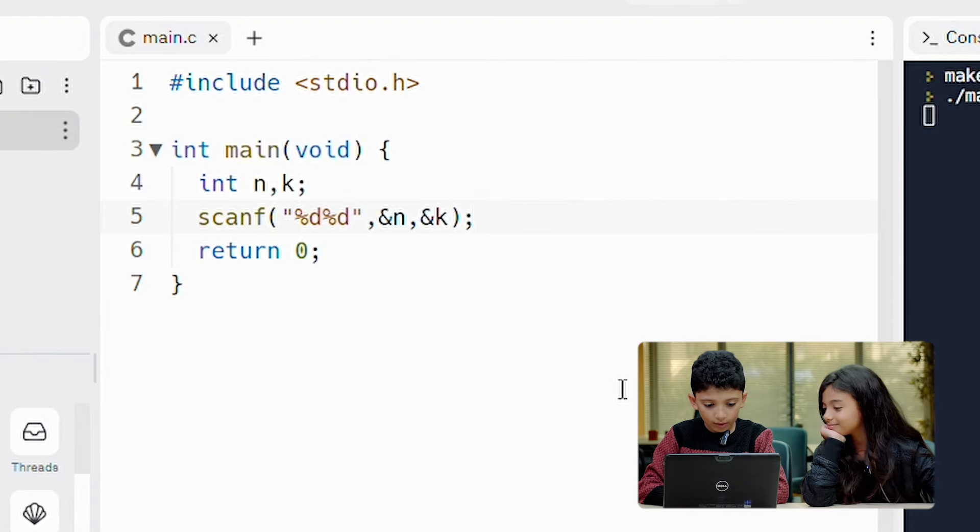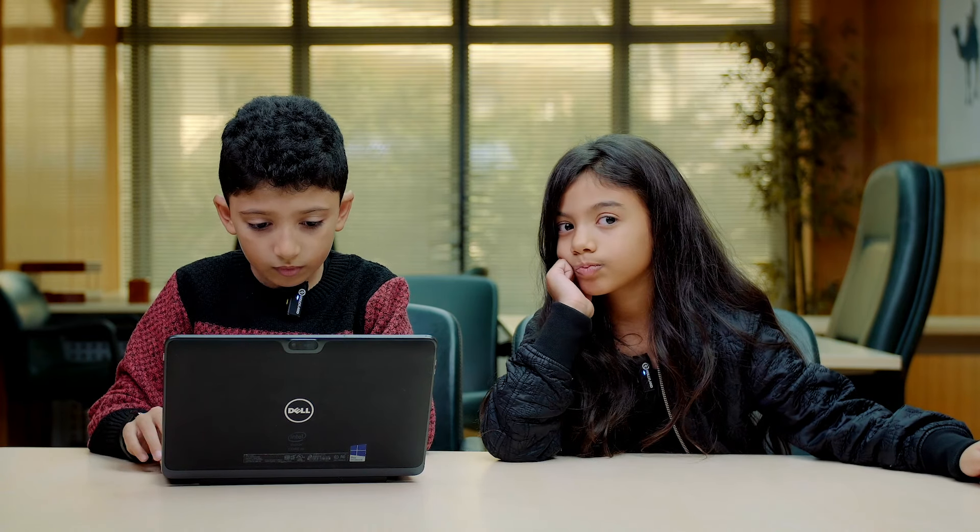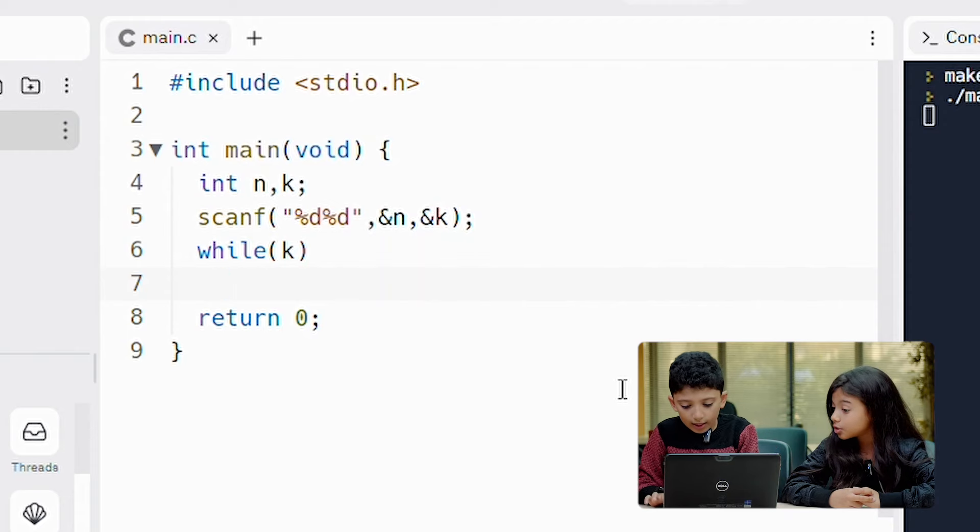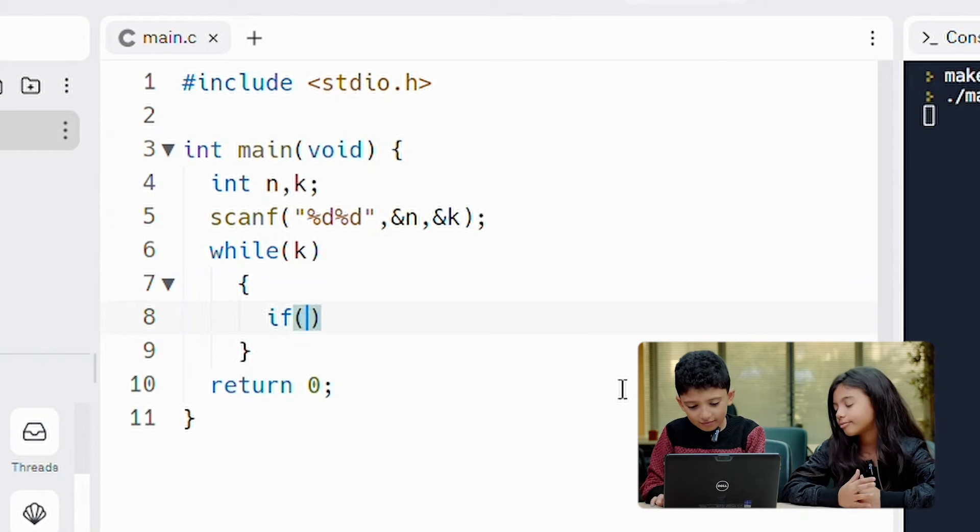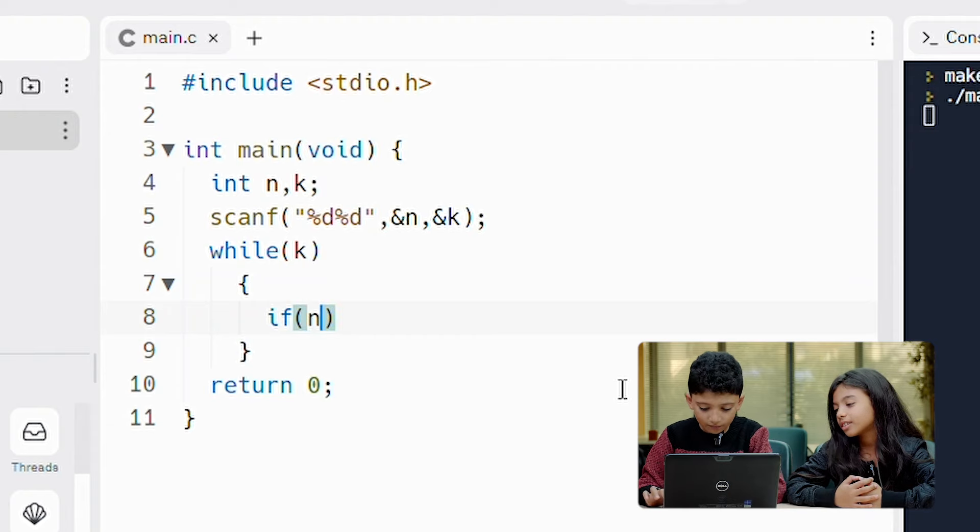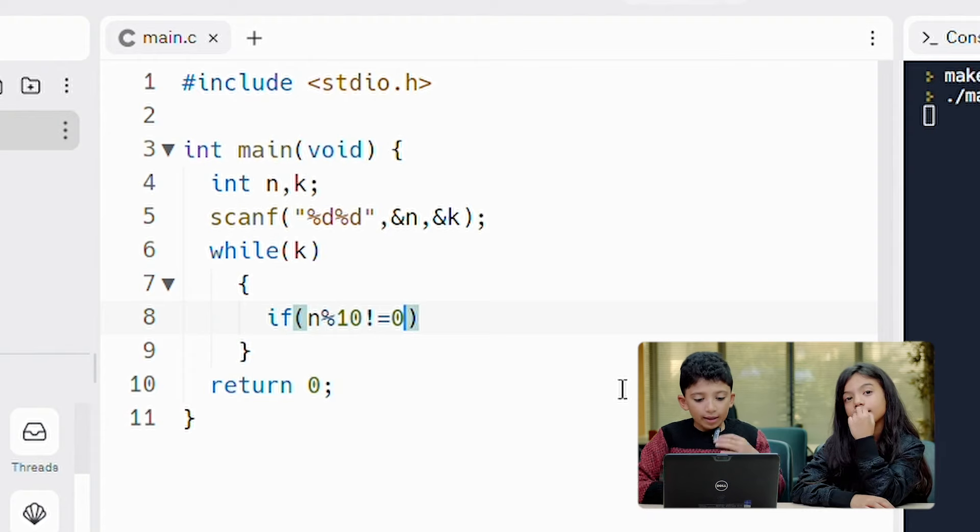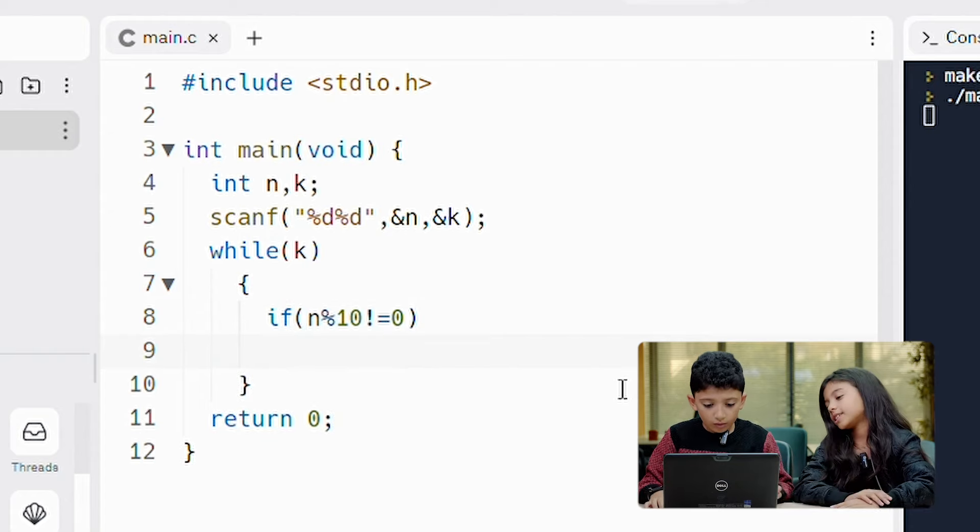Next I'm going to do while. One, and then I'll write k which means k not zero. When it becomes zero it stops. Okay. Next we're gonna do curly brackets. And then we're gonna do if. I'll do if n mod ten not equal zero. What does that mean? n mod ten not equal zero, meaning if the last number is not zero, n minus minus, meaning we'll do n minus 1.